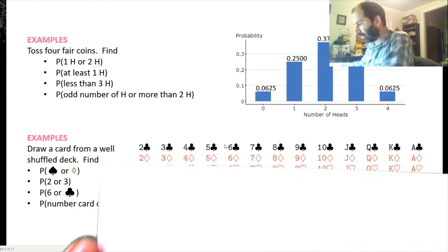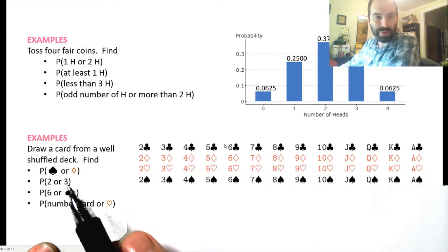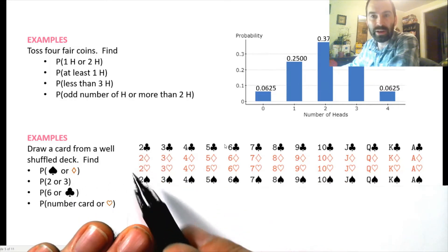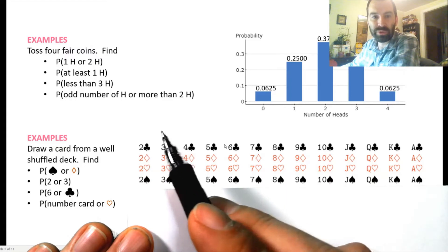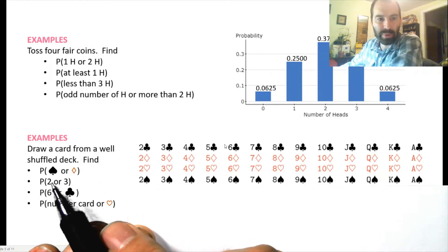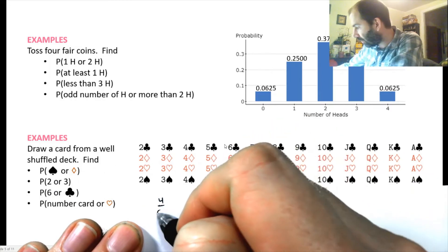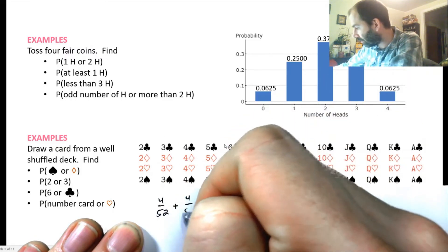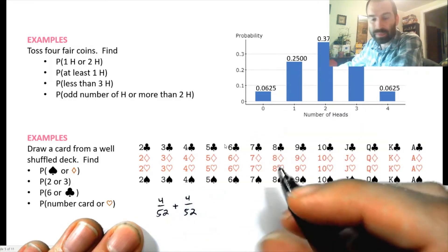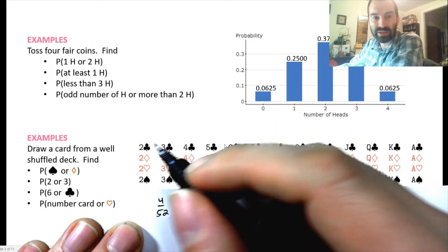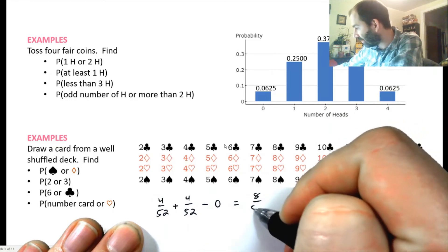P(two or three): there are four twos and four threes in the deck, so P(2) = 4/52 and P(3) = 4/52. Drawing one card, it's impossible to get both a two and a three simultaneously, so P(2 and 3) = 0. Therefore P(2 or 3) = 8/52.